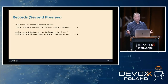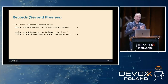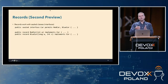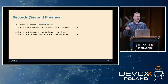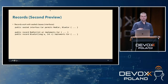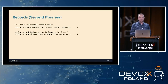Records also work well with sealed classes from the perspective of sealed interfaces. If you define a sealed interface called Car which permits two sub-interfaces RedCar and BlueCar, you can create record RedCar implements Car and record BlueCar implements Car, and that will work quite happily. So records work with sealed interfaces.